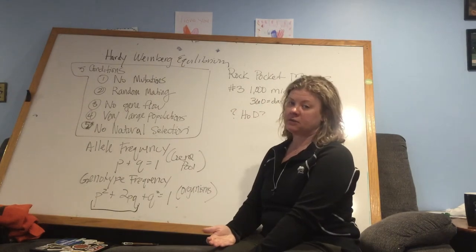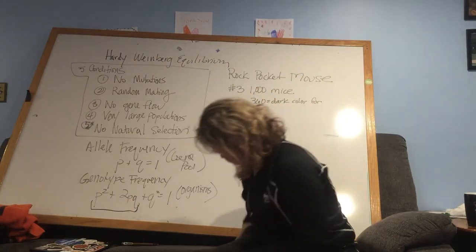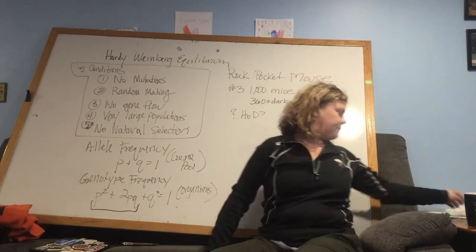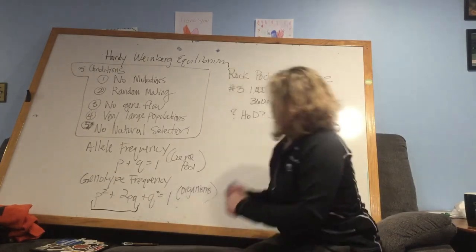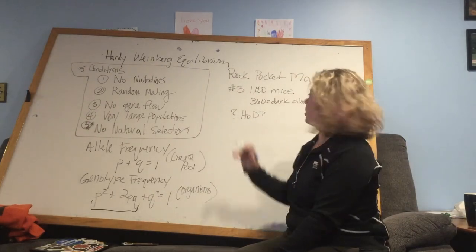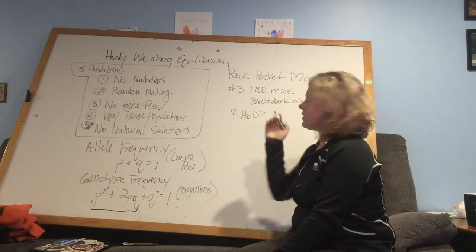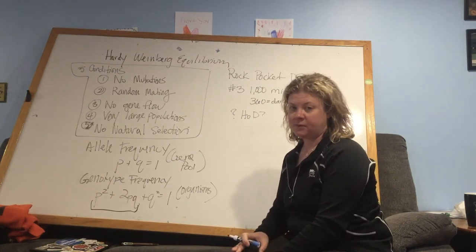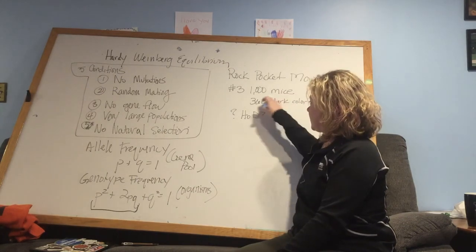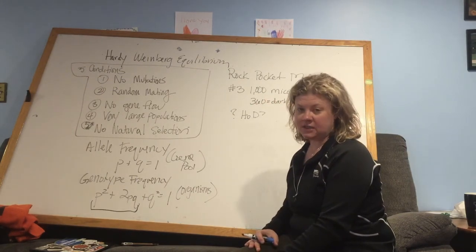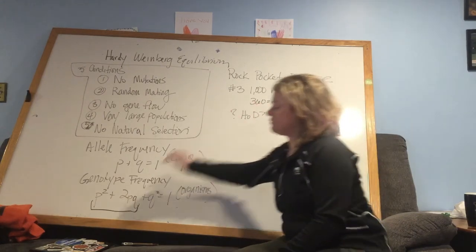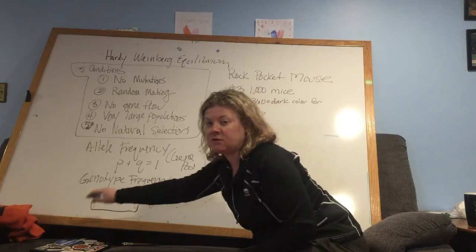So we look at rock pocket mouse problem number three. We have a thousand mice and 360 of them display the dark color dominant phenotype. The question is asking how many of those 360 are actually homozygous dominant. Now this 360 is referring to both of these types of individuals. So I can't get that information directly from that number.